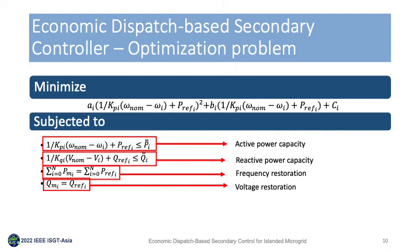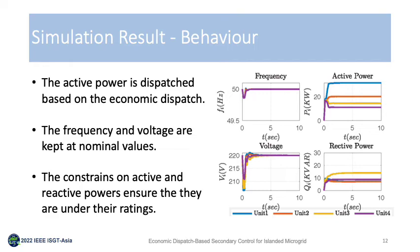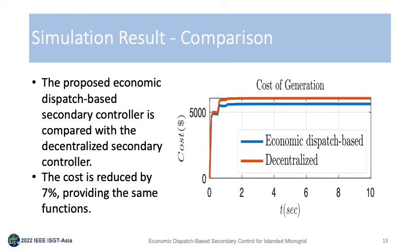A four-bus system was used to validate the proposed controller. The cost coefficients are given in the table, organized in descending order such that unit 1 has the lowest generation cost and unit 2 has the highest. Simulation results show that active power was dispatched based on cost of generation, where unit 1 carried most of the load. Frequency and voltage were restored to nominal values while constraints on active and reactive power ensured units remained under rated capacity. The proposed controller was compared with decentralized secondary control, which restores frequency and voltage without considering power sharing.